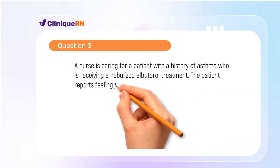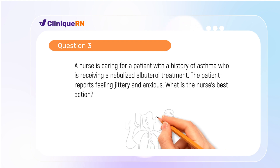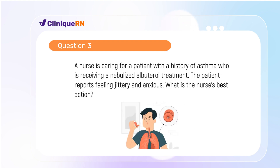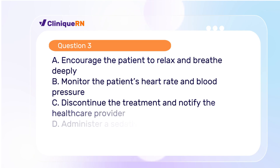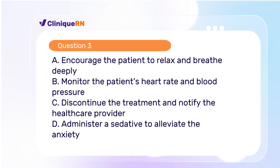Question 3. A nurse is caring for a patient with a history of asthma who is receiving a nebulized albuterol treatment. The patient reports feeling jittery and anxious. What's the nurse's best action? A. Encourage the patient to relax and breathe deeply. B. Monitor the patient's heart rate and blood pressure. C. Discontinue the treatment and notify the healthcare provider. D. Administer a sedative to alleviate the anxiety.